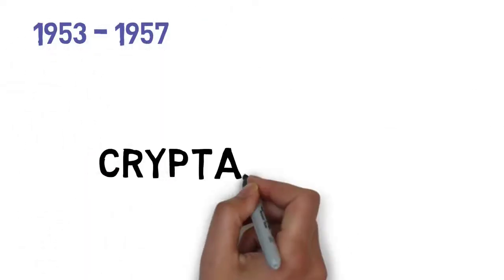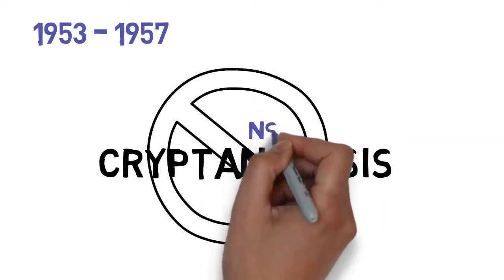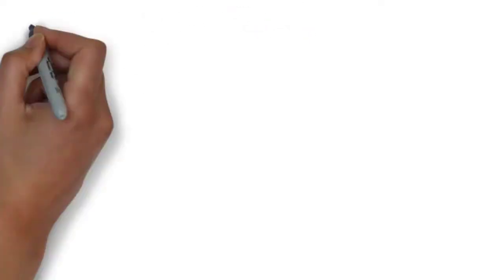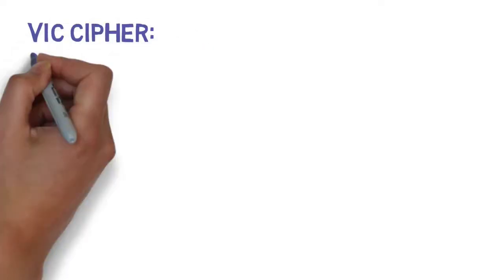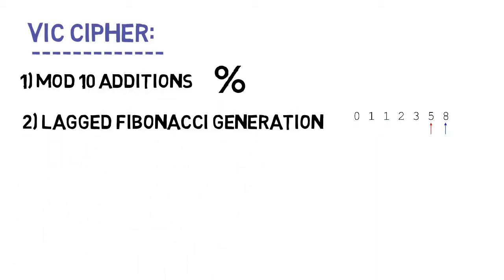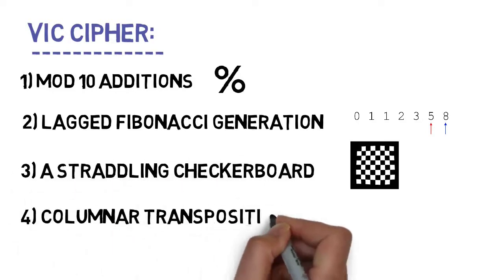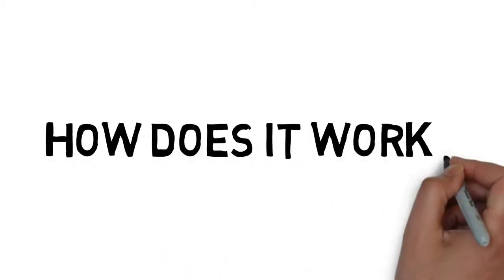Up until that point, the cipher successfully resisted all attempts of cryptanalysis done by the NSA. This cipher included several important components within it, most notably mod 10 additions, lagged Fibonacci generation or chain addition, a straddling checkerboard, columnar transposition, and more. So let's take a look at how it actually worked.